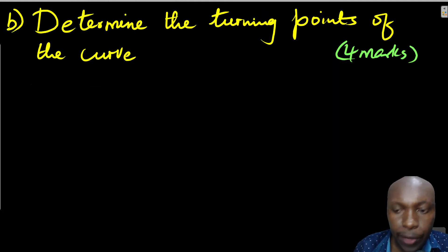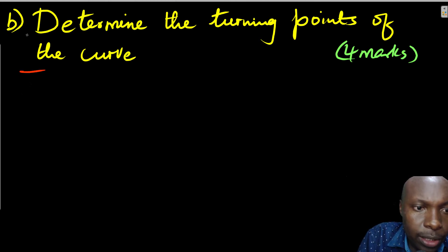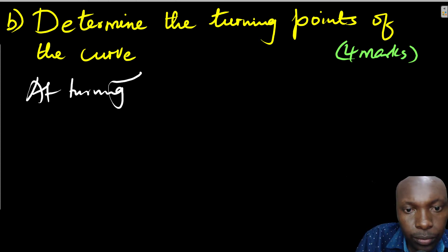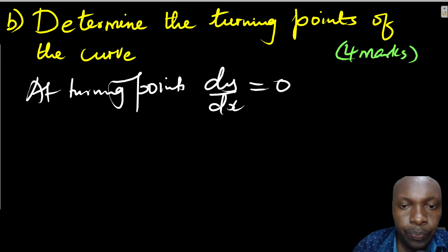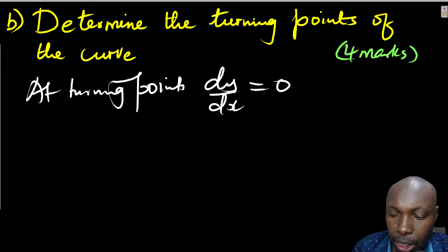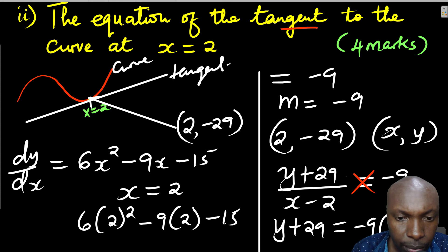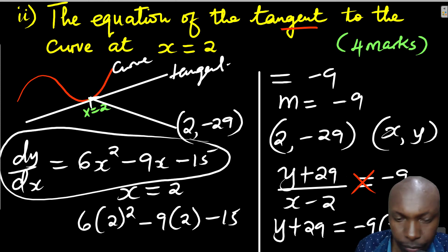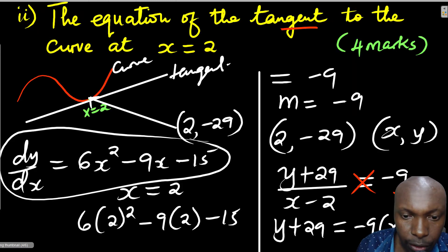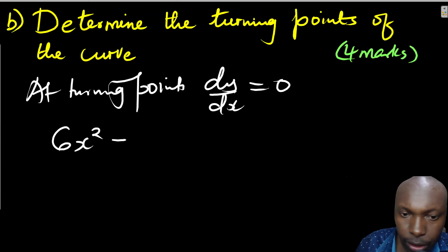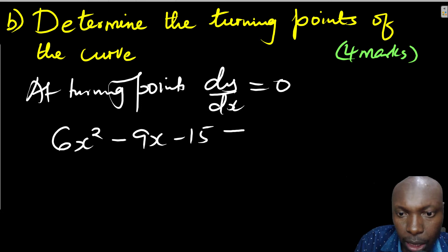The last part is determining the turning point of the curve. At a turning point, the gradient is 0. So we take the gradient function — which we already obtained as 6x squared minus 9x minus 15 — and equate it to 0. Solving this will give the x values at the turning points of the curve.